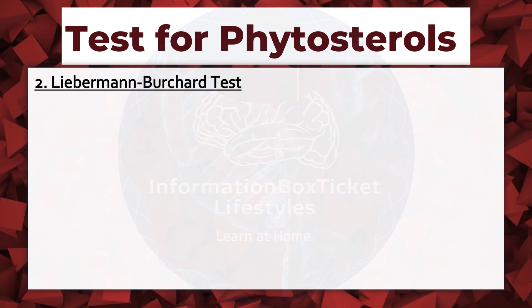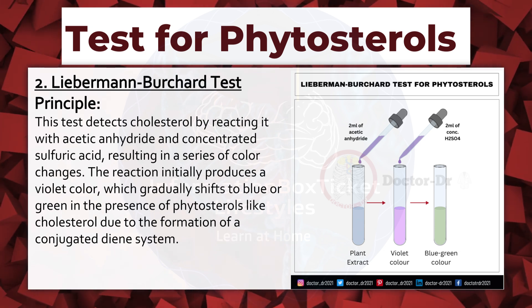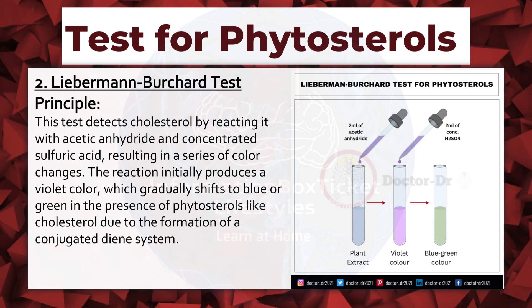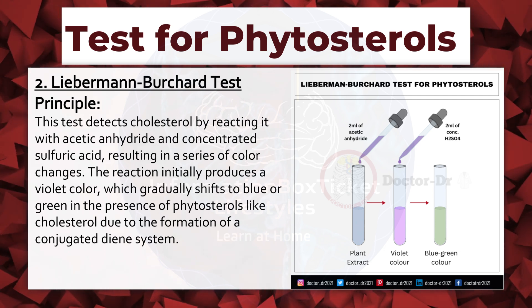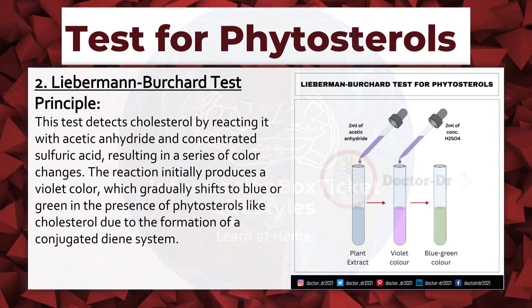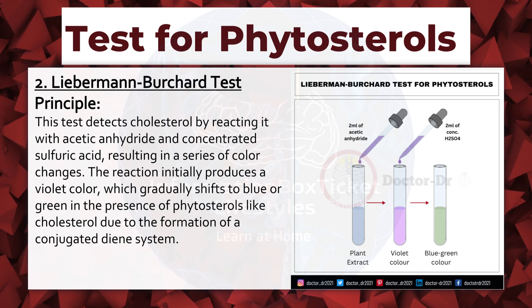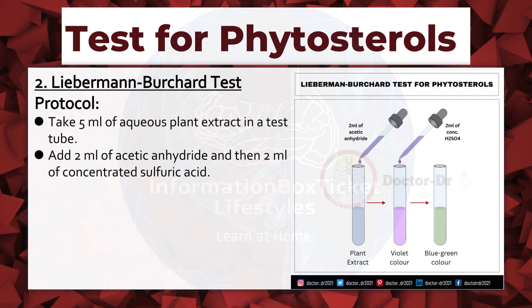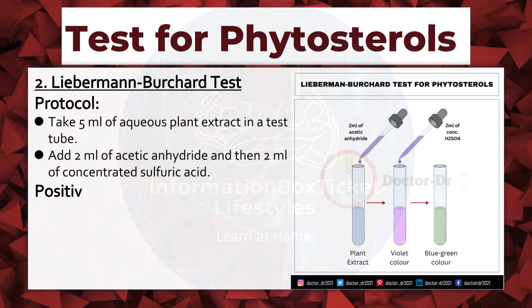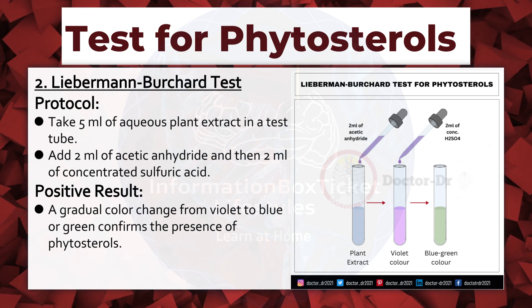Liebermann-Burchard Test. Principle: this test detects cholesterol by reacting it with acetic anhydride and concentrated sulfuric acid, resulting in a series of color changes. The reaction initially produces a violet color which gradually shifts to blue or green in the presence of phytosterols like cholesterol, due to the formation of a conjugated diene system. Protocol: take 5 milliliters of aqueous plant extract in a test tube, add 2 milliliters of acetic anhydride, then 2 milliliters of concentrated sulfuric acid. Positive result: a gradual color change from violet to blue or green confirms the presence of phytosterols.